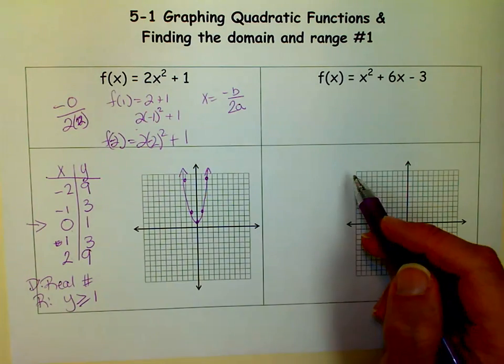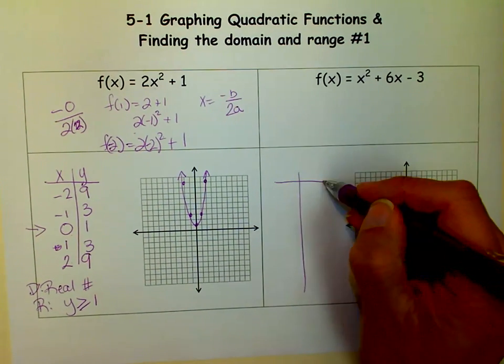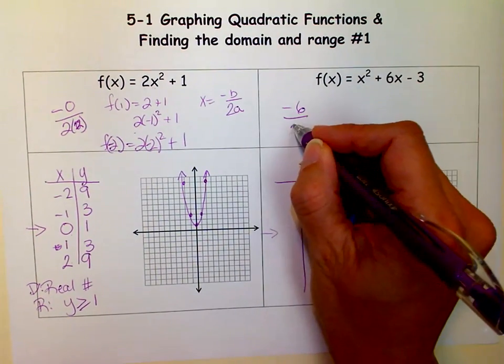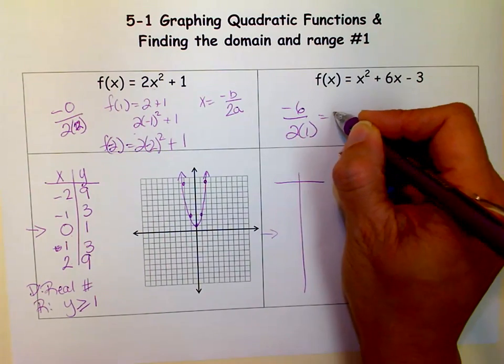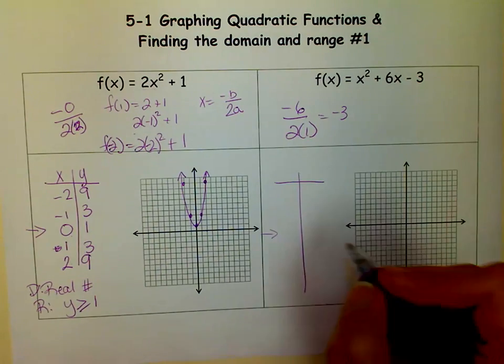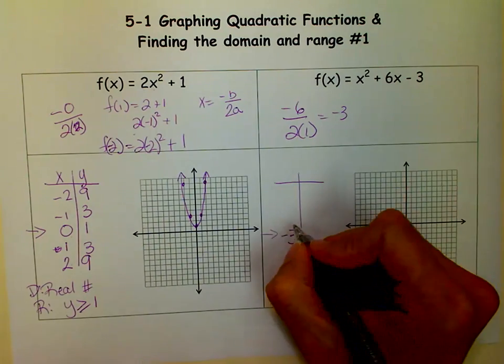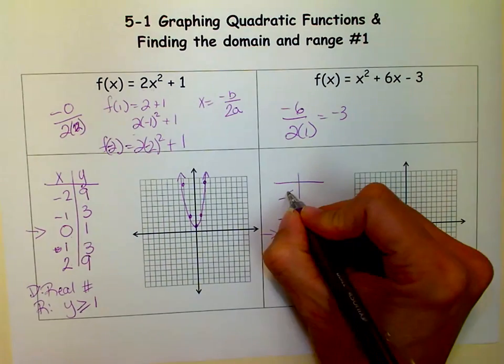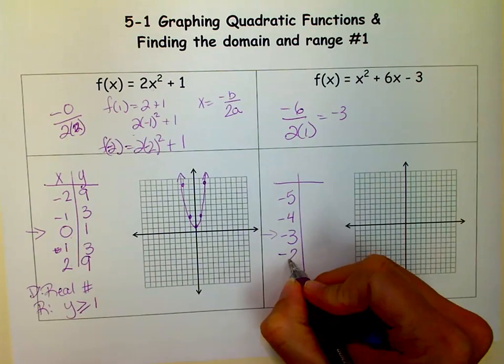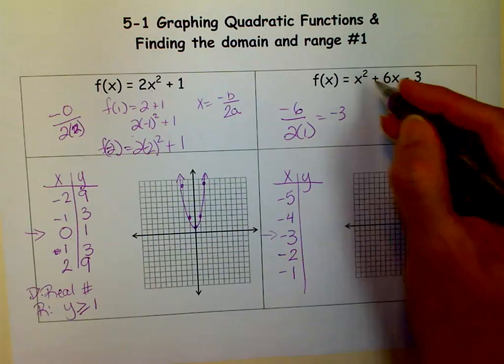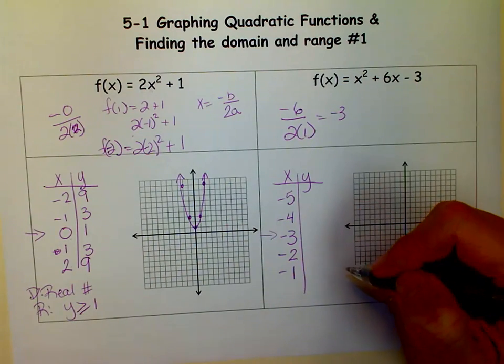Okay, let's try this one. Again, my t-chart, I want to make sure I get my vertex right in the middle. So I do negative b over 2 times a. In this case, we get a negative 3. So I am going to put negative 3 right here. Then I'm going to do a couple points to the left, a couple points to the right.